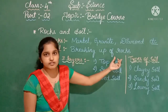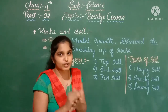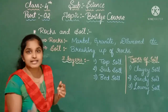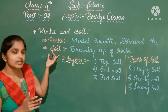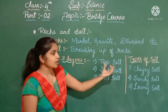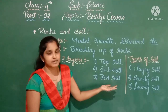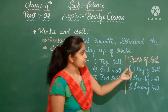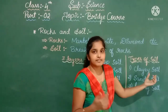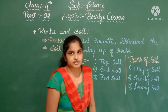Soil is formed by the breaking up of rocks into small pieces — those small pieces of rocks are nothing but soil. Soil is used for plants' growth. Soil contains three layers: top soil, subsoil, and bed soil. Top soil is the topmost layer where plants grow, subsoil is the middle layer, and bed soil is the bottom layer. There are also many types of soil — mainly clayey soil, sandy soil, and loamy soil. Clayey soil is found in fields, while sandy soil and loamy soil are used for construction of buildings.